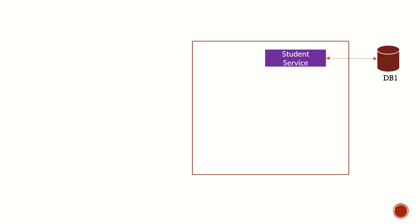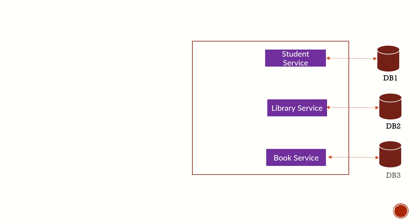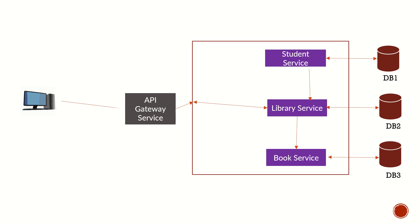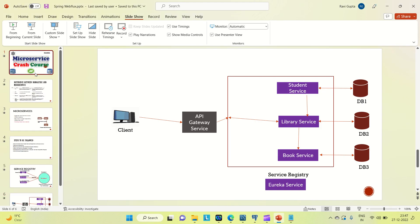Coming to the API gateway: the student service uses database DB1, the library service uses DB2, and the book service uses DB3. Book service is called by library service, and library service is called by student service. We have developed one API gateway service, and with its help the client can directly call each of the services. This is about the whole flow of the project we are going to develop. Let me go to IntelliJ and from there I will show you how to start development.